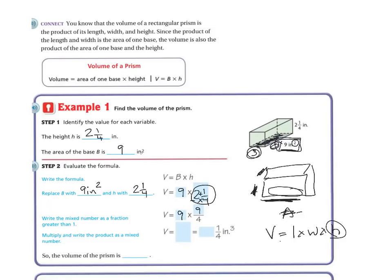And then when we're doing this, remember we put the 1 underneath. So I have 9 times 9, which is 81, and I have 1 times 4, which is 4.